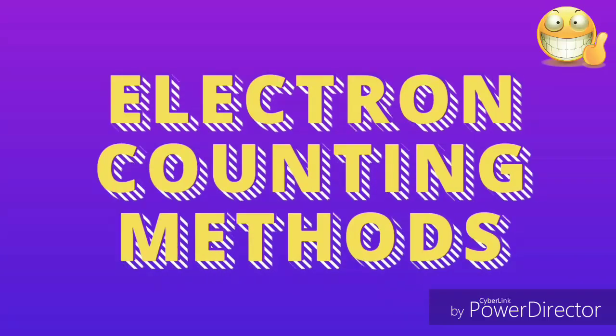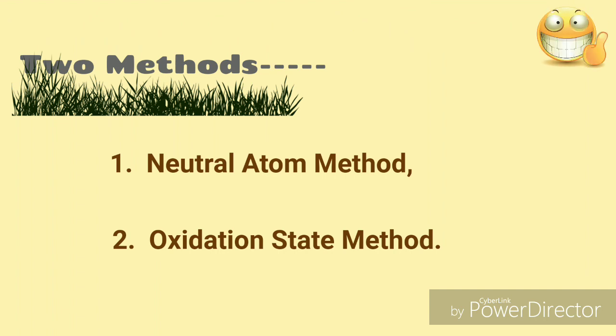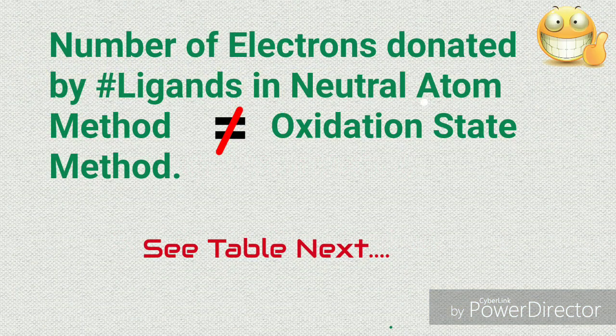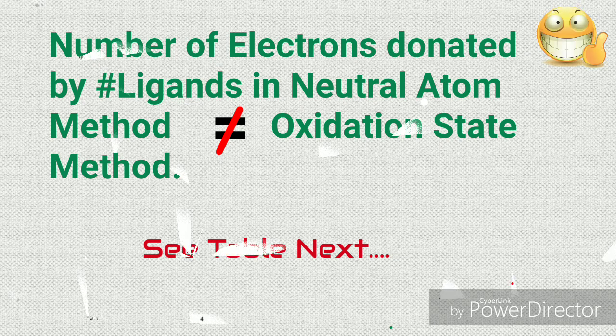Now we count electrons in complexes by two methods: first, neutral atom method, and the second is oxidation state method. You must learn any one of these or both. Before we start, you should know that the number of electrons donated by ligands in neutral atom method or oxidation state method is different.